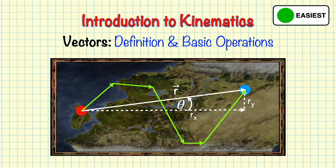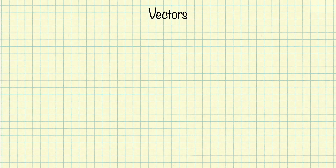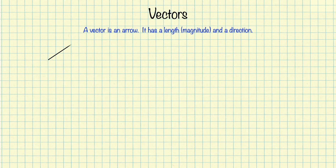I've rated the physics level in this video as easiest. So what is a vector? A vector is just another word for an arrow. Arrows have a length, which we call the magnitude, and they point in some direction. So let's draw an arrow, or a vector, that I'm going to call r. We know that r is a vector because of this notation where I've got a little arrow on top of the r.